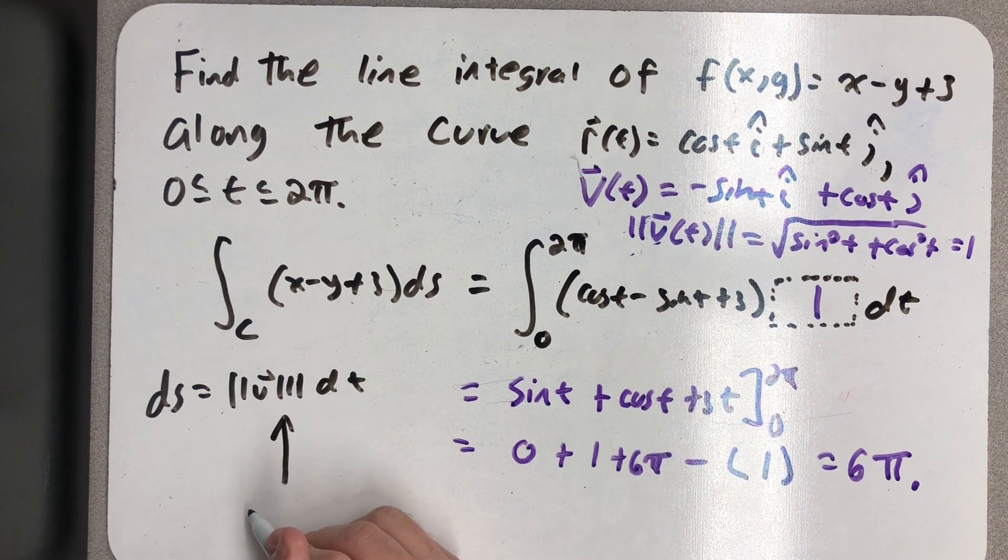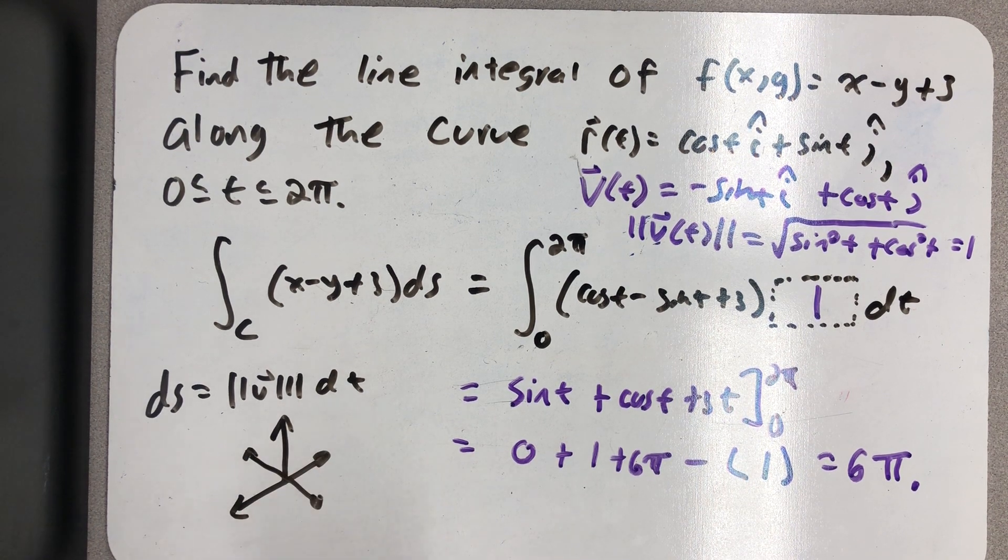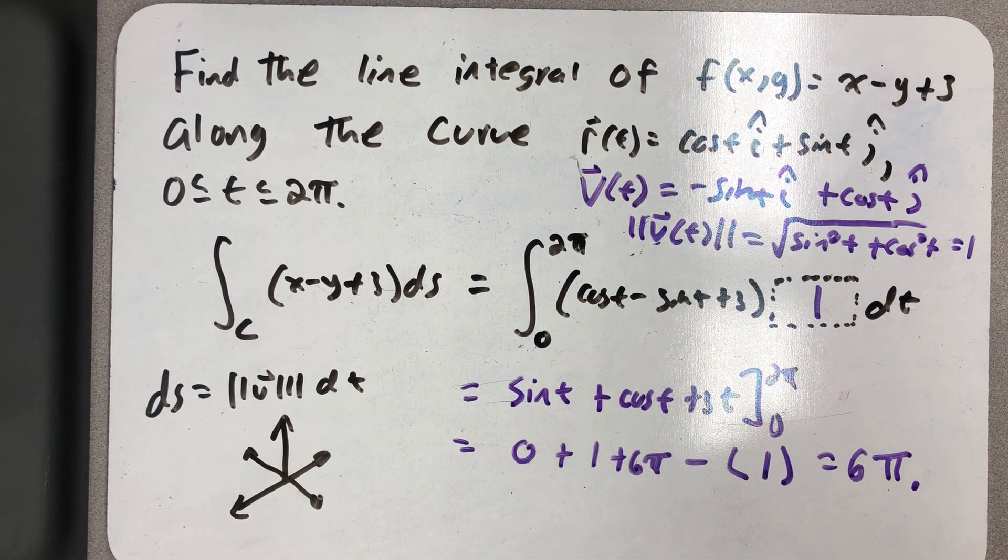So there's my z-axis, an x-axis, and a y-axis. All right, so the unit circle in the plane is my curve.